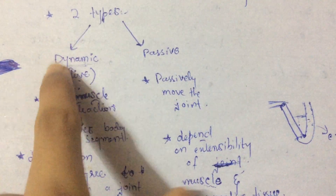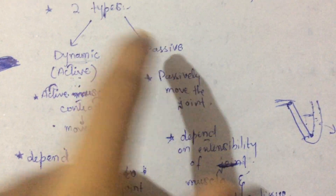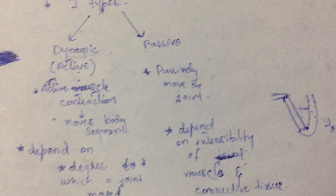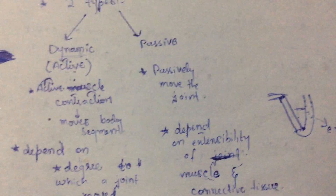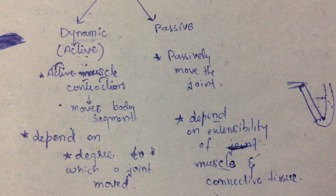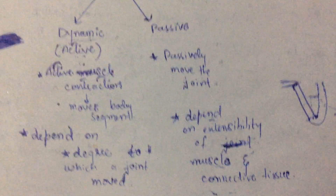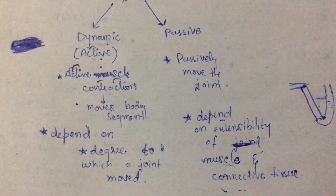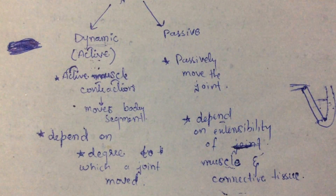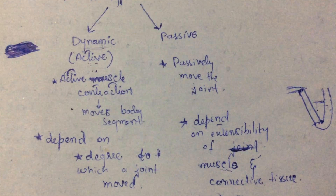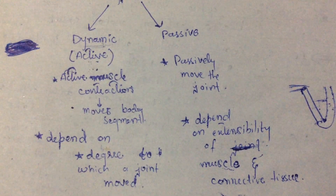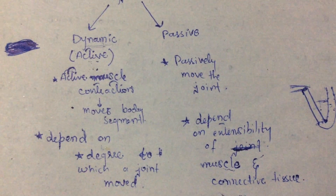So those are the two types of flexibility: dynamic and passive. In the next part we are going to study the architecture and their types. Thanks for watching.